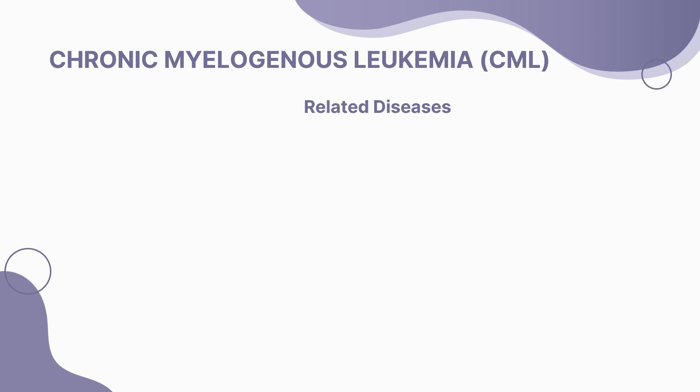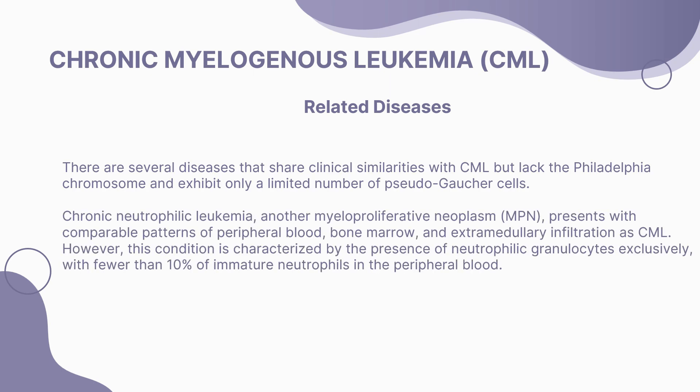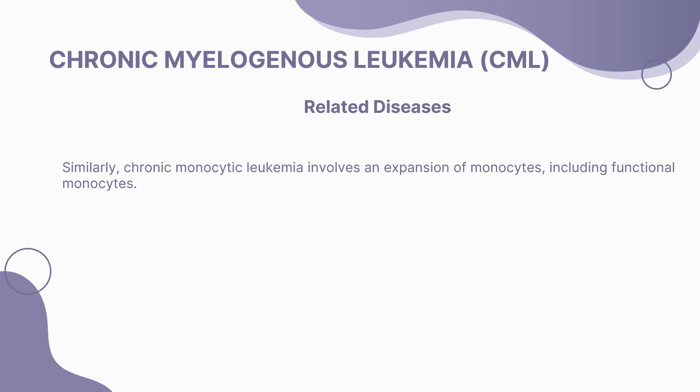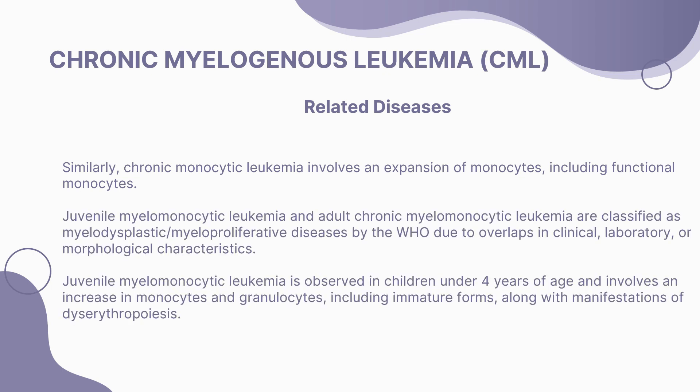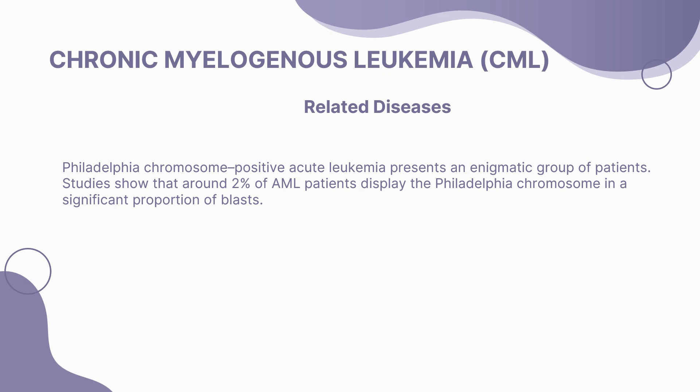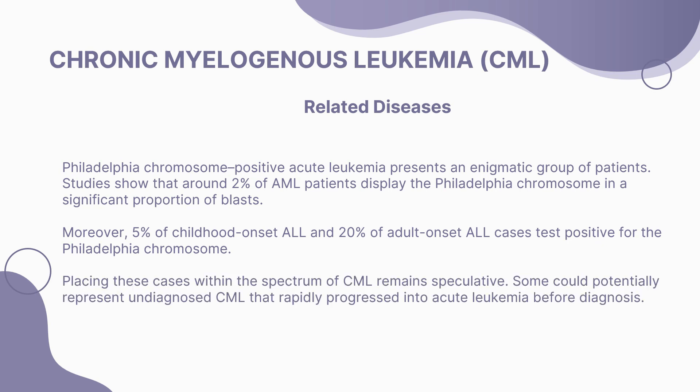Related diseases share clinical similarities with CML but lack the Philadelphia chromosome. Chronic neutrophilic leukemia presents similar patterns but is characterized by neutrophilic granulocytes exclusively. Chronic monocytic leukemia involves expansion of monocytes. Juvenile and adult chronic myelomonocytic leukemia are classified as myelodysplastic/myeloproliferative diseases. Philadelphia chromosome positive acute leukemia is enigmatic — around 2% of AML patients and 5% of childhood ALL cases test positive, potentially representing undiagnosed CML that rapidly progressed before diagnosis.